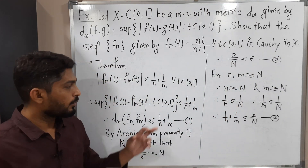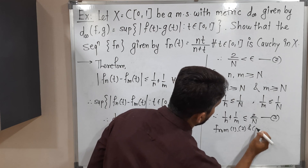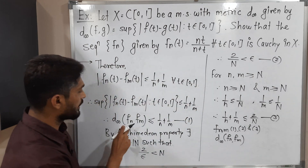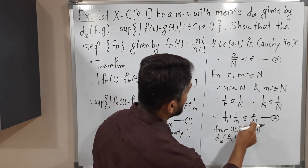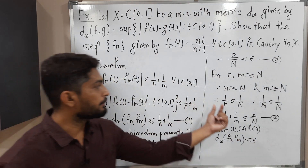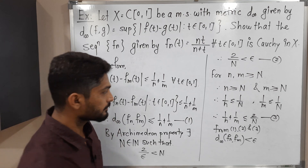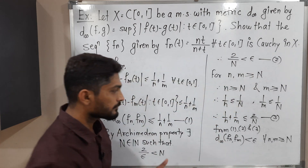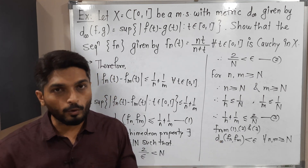So let us combine inequalities (1), (2), and (3). From (1): D∞(Fn, Fm) ≤ 1/n plus 1/m. From (3): 1/n plus 1/m ≤ 2/N. From (2): 2/N less than epsilon. By transitivity — A ≤ B, B ≤ C, C less than D implies A less than D — we get D∞(Fn, Fm) less than epsilon, for all n, m greater than or equal to capital N. This is precisely the definition of a Cauchy sequence, so Fn is a Cauchy sequence.